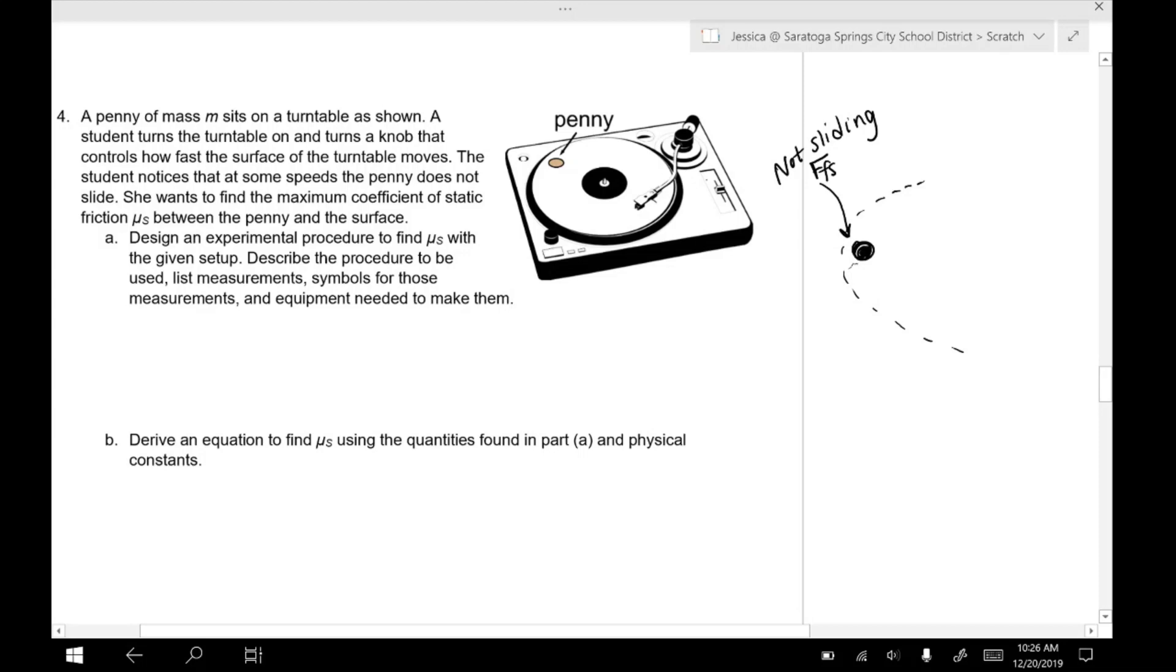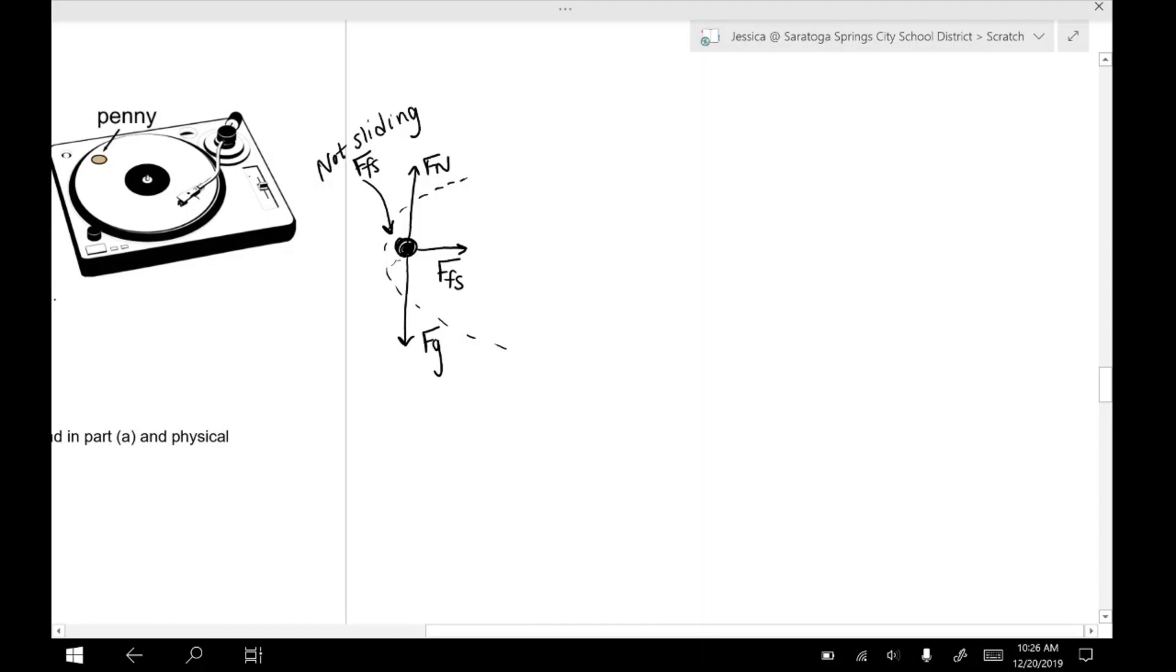Okay. So the free body diagram for this penny would look like a force of static friction pointing in towards the circle and our standard normal force and force of gravity in the y direction. So again, we'll look at net force equations for this question. We'll look at the y direction first, since that's a little bit more familiar. We're going to equal zero because the penny's not jumping off the turntable or crashing through it. So we have a normal force minus Fg equals zero. And like we've seen many times before, the normal force is equal to Fg. Remember that's not an always thing, just happens a lot.